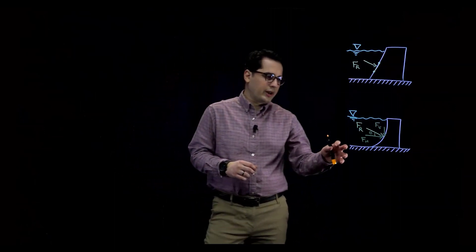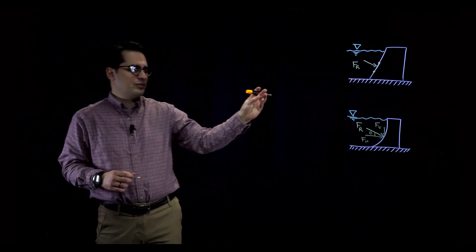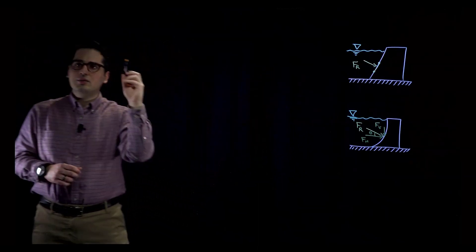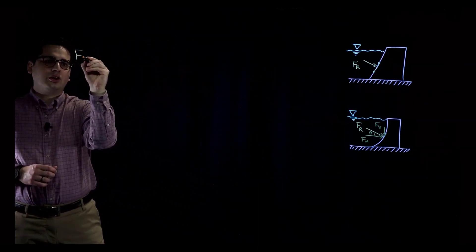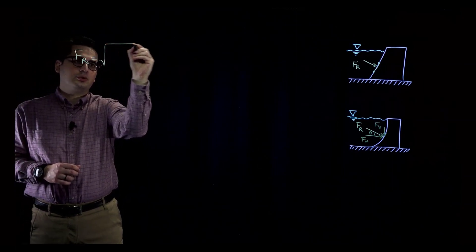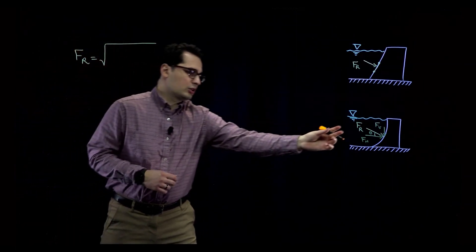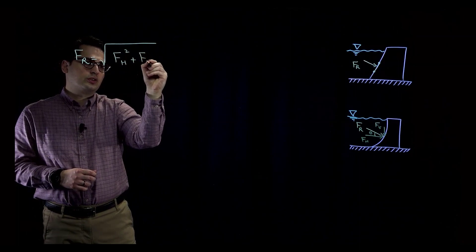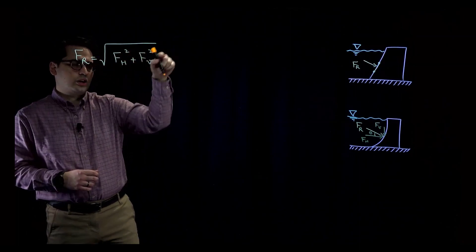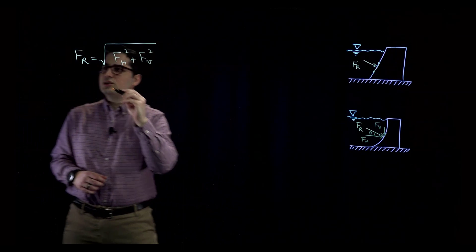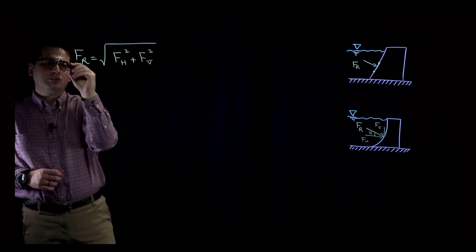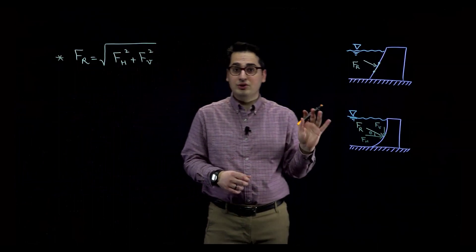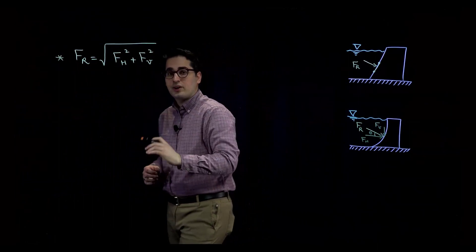In this video, we are going to learn how to calculate the resultant force from the horizontal and vertical forces. If we have the values of F sub H and F sub V, the resultant force is calculated using the familiar equation: the square root of the horizontal force squared plus the vertical force squared. This gives us the magnitude.